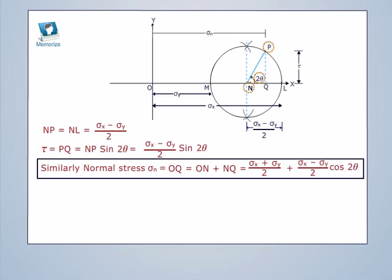Similarly, sigma n is equal to oq is equal to on plus nq is equal to sigma x plus sigma y by 2 plus sigma x minus sigma y by 2 cos 2 theta.